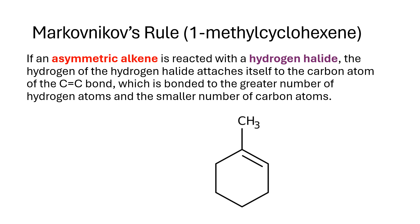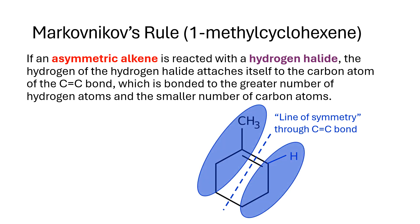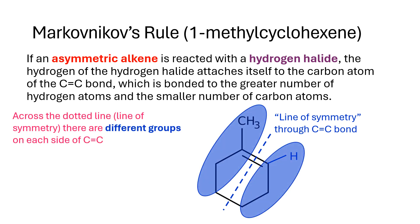First of all, let's establish why 1-methylcyclohexene is an asymmetric alkene. If you put a line of symmetry through the carbon-carbon double bond and put the hydrogen on there so you can see that it's attached, then clearly there are different groups on either side of the carbon-carbon double bond.